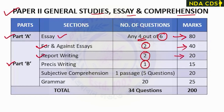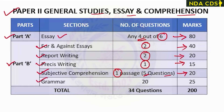There will be one question for precise writing, which will be 15 marks. There will also be one passage of five questions — a subjective comprehension — for 20 marks. Next is the grammar section, which will have 20 questions for 25 marks. There will be a total of 34 questions in Paper 2, and the maximum marks allotted for Paper 2 is 200.